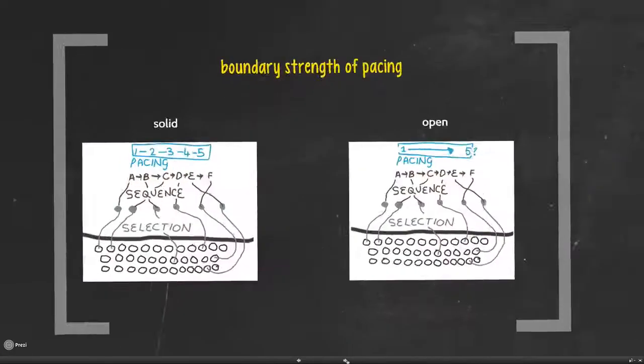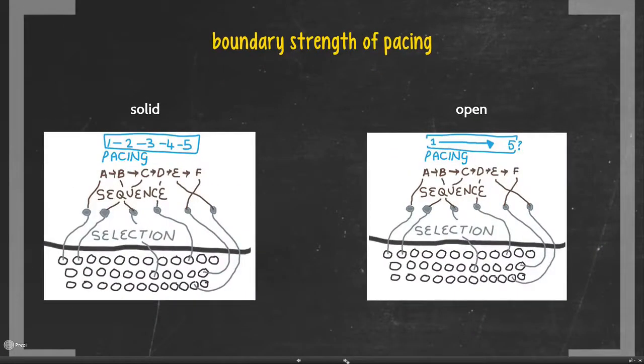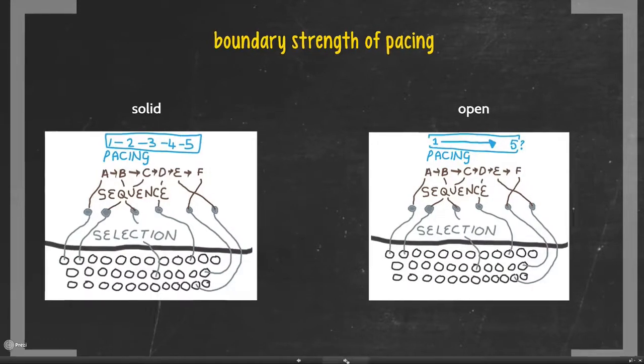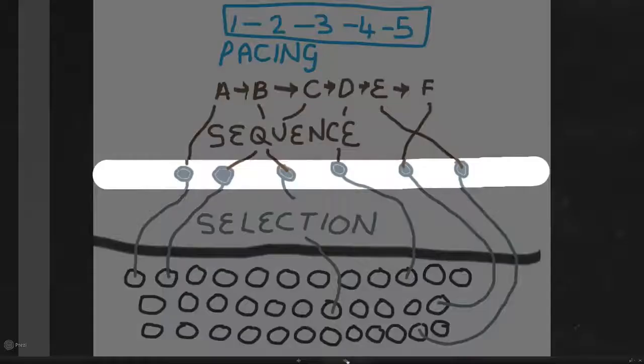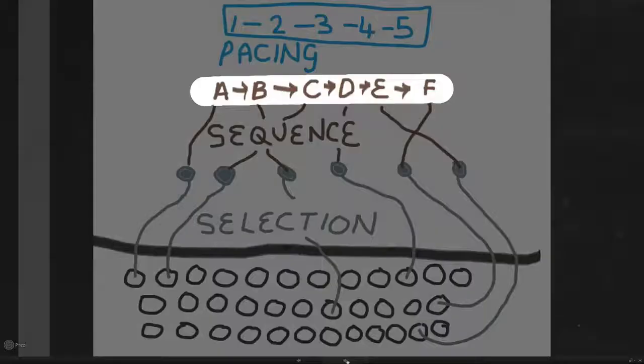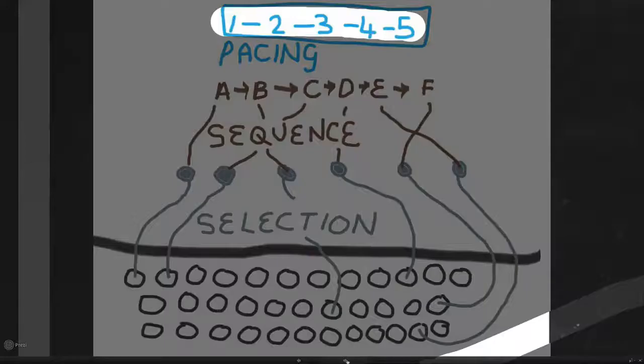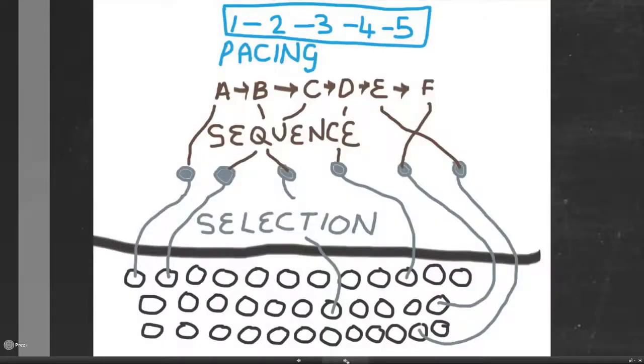In terms of the boundary strength of pacing, it's pretty logical how you move from selecting something to then giving it some kind of a sequence, and then once you've selected and sequenced, you decide what the pacing is. How are you actually going to time the lesson? How are you going to break up the time? How are you going to make the lesson go through its paces?